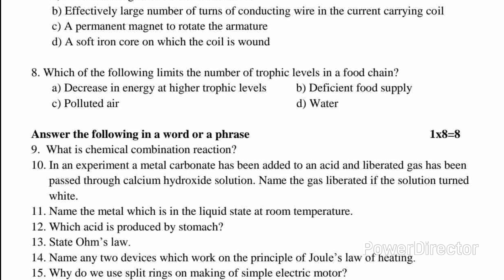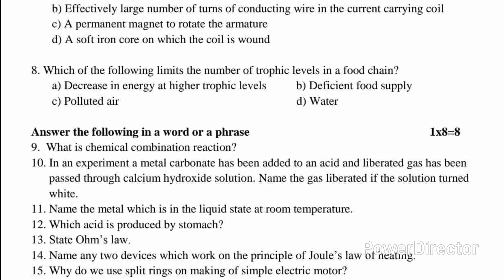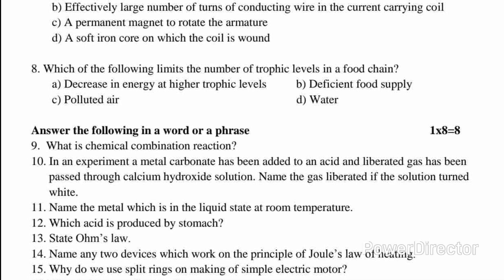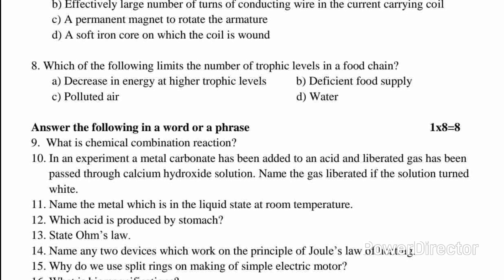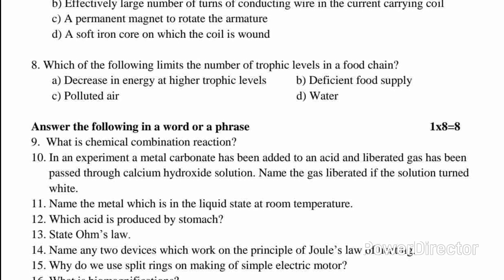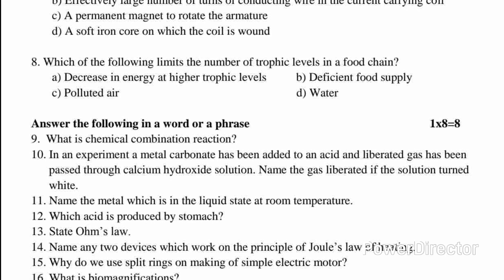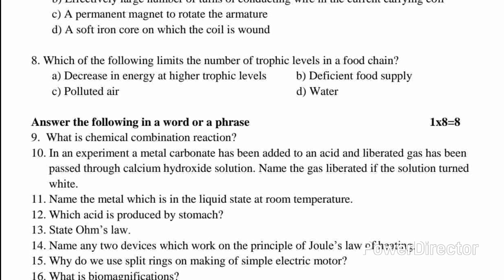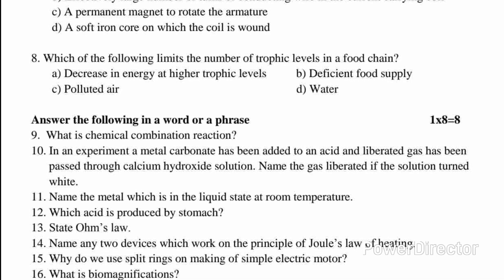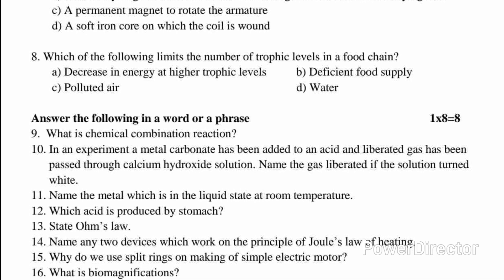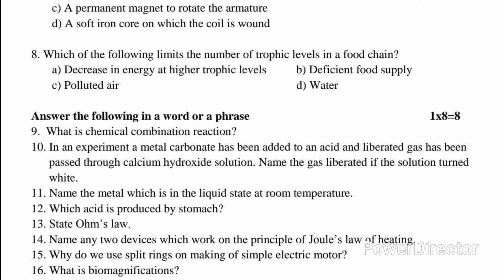Question 10: In an experiment, a metal carbonate has been added to an acid and the liberated gas has been passed through calcium hydroxide solution. Name the gas liberated if the solution turned white. Answer: Carbon dioxide gas is released. Question 11: Name the metal which is in the liquid state at room temperature. Answer: Mercury.